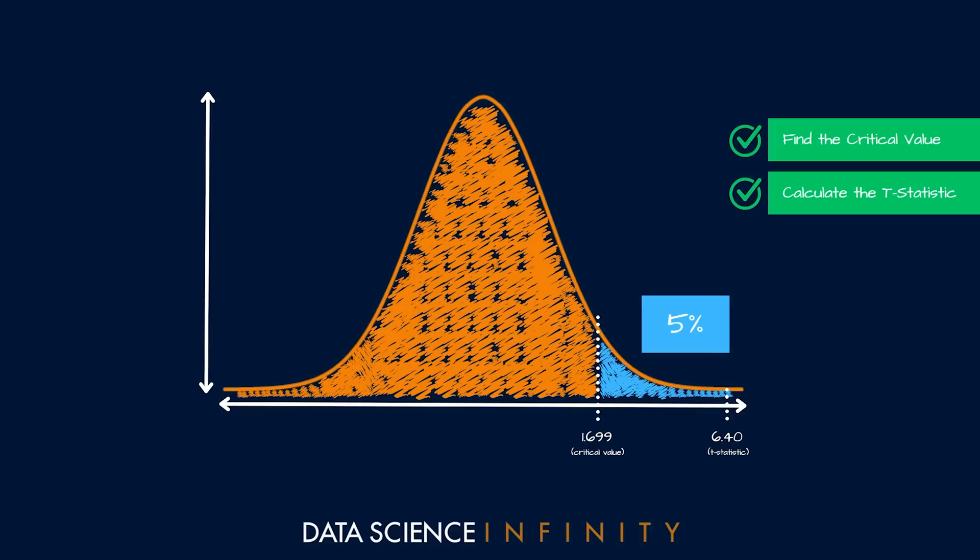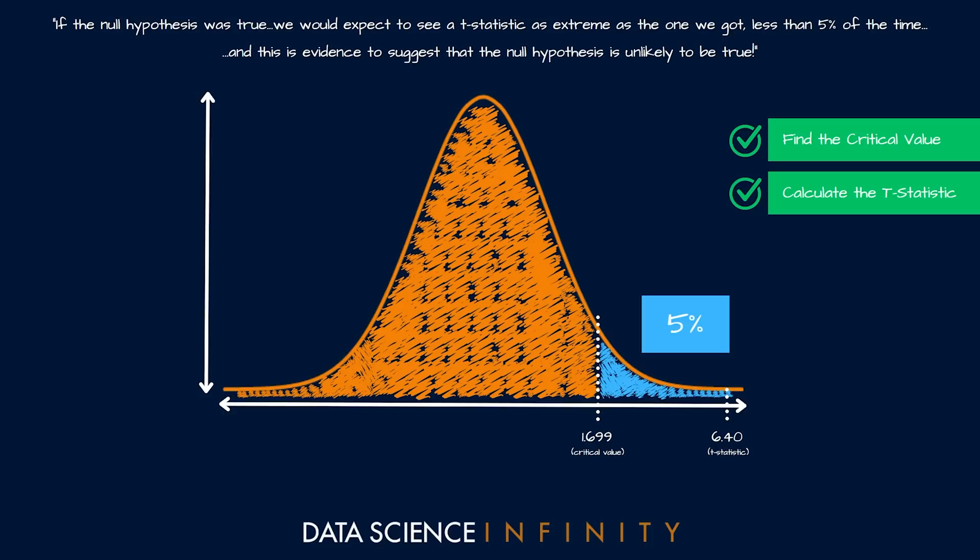To put this into words, what falling into this area means is essentially that if the null hypothesis was true, in other words if there was truly no difference between our team's mean vertical leap before and after the training program, we would expect to see a t statistic as extreme as this based on the differences in the means less than 5% of the time. Because of this we see this as evidence to suggest that the null hypothesis is unlikely to be true.